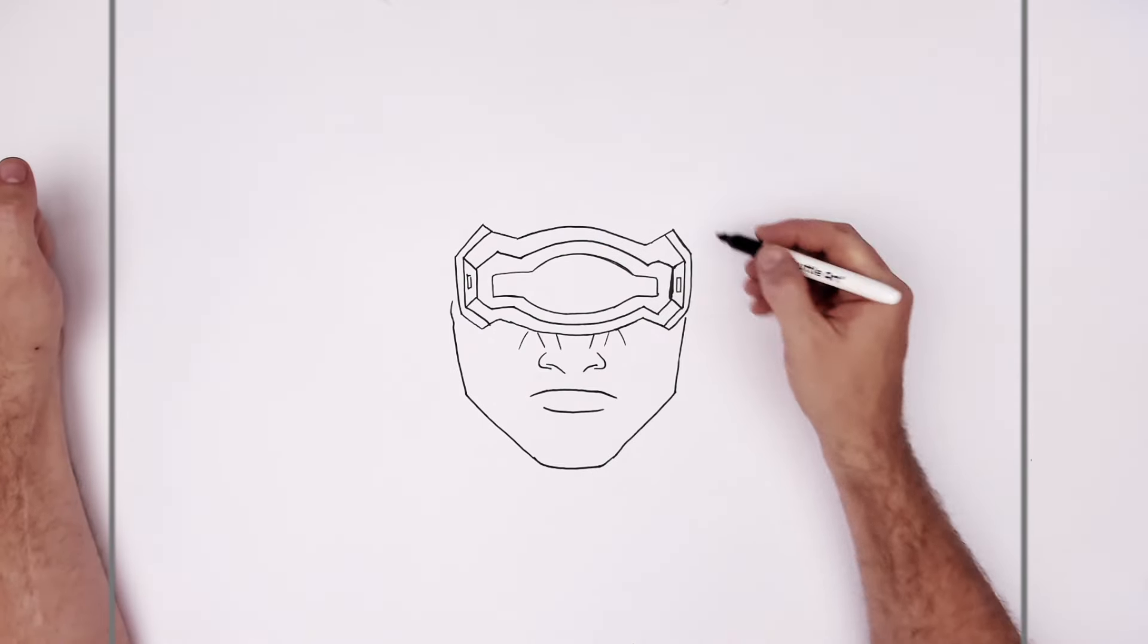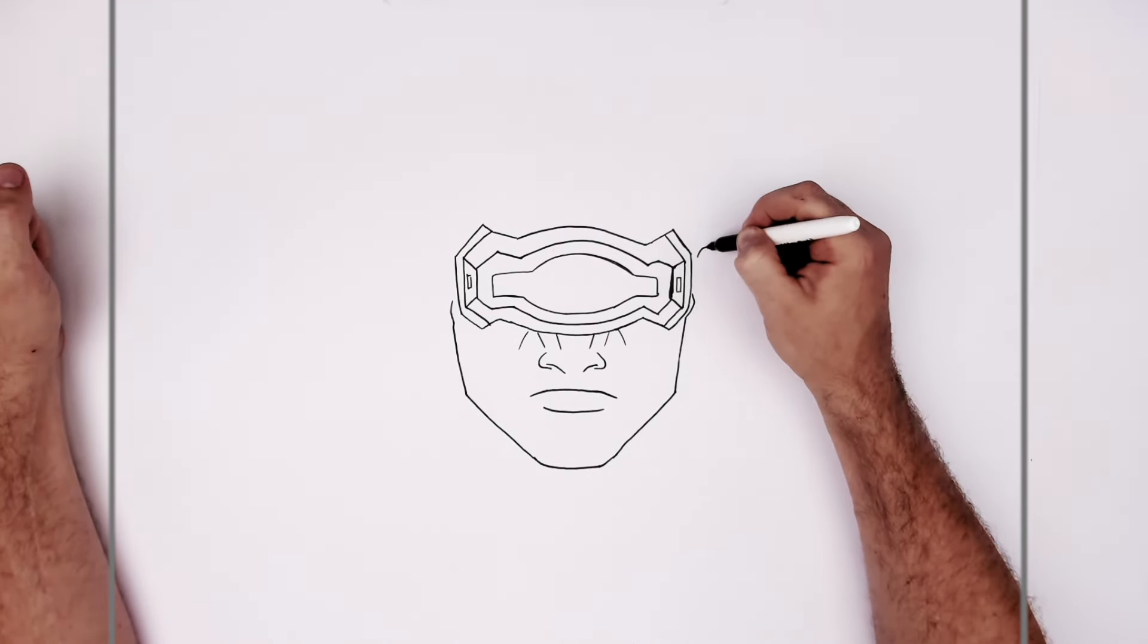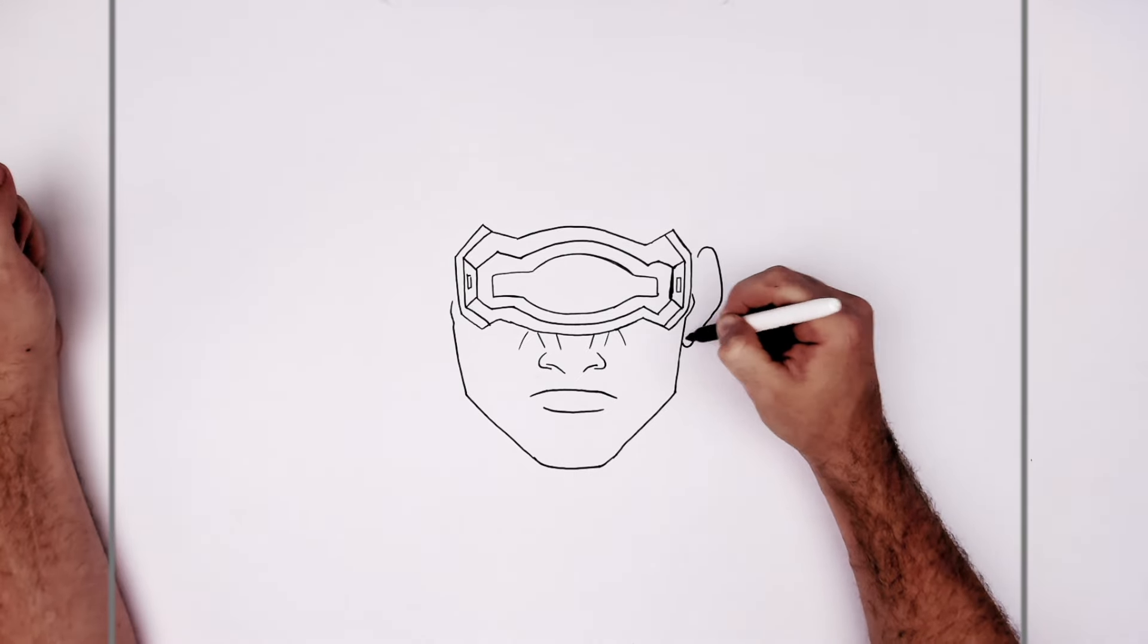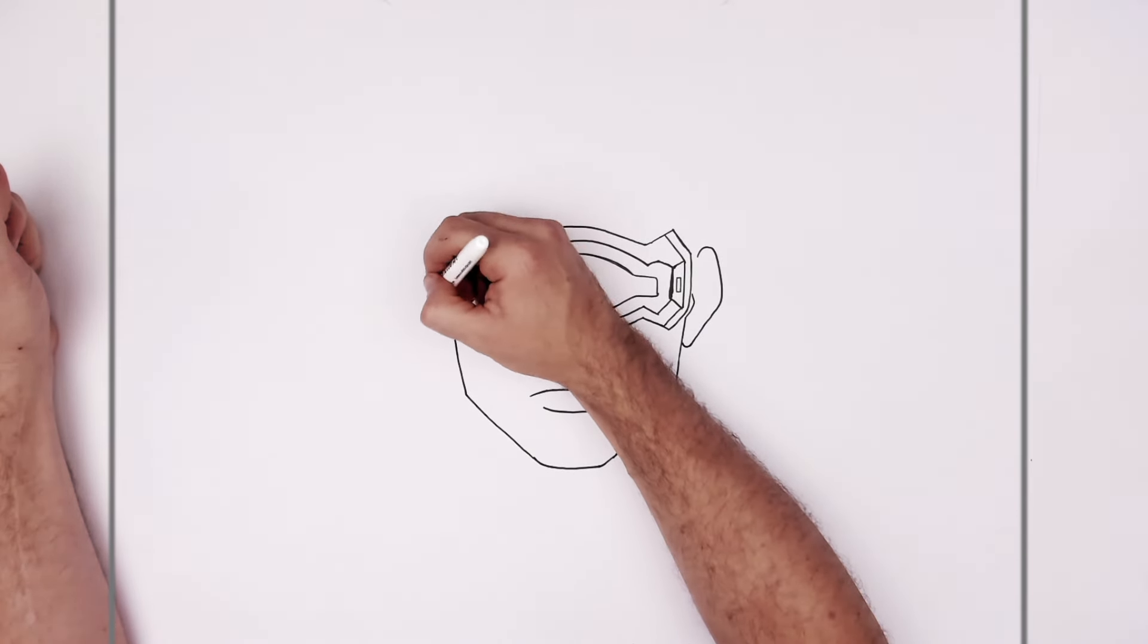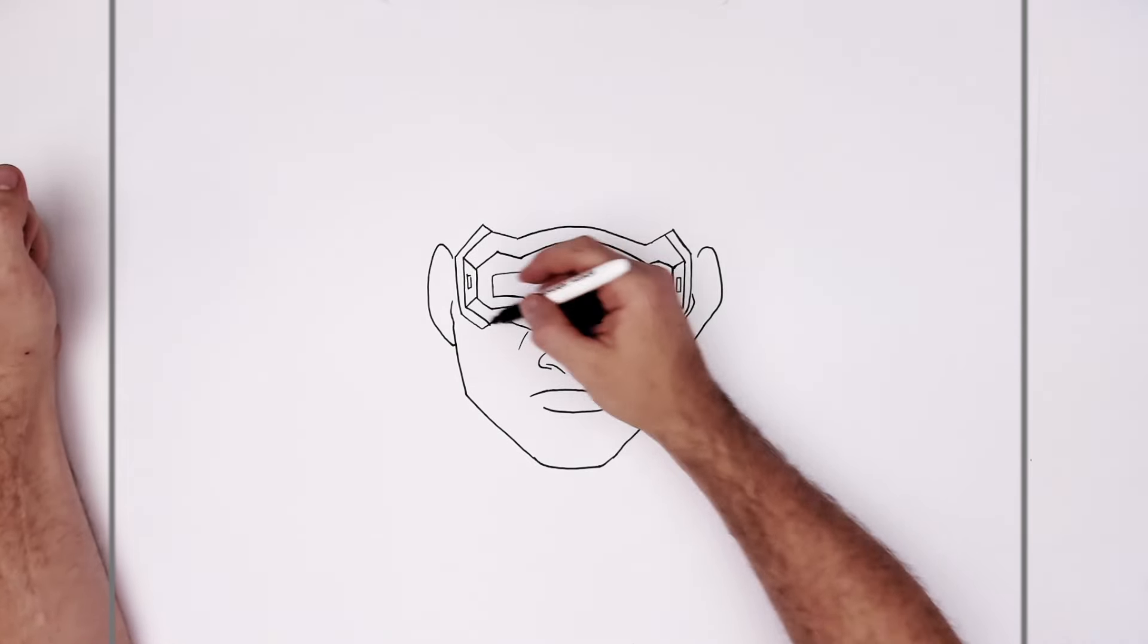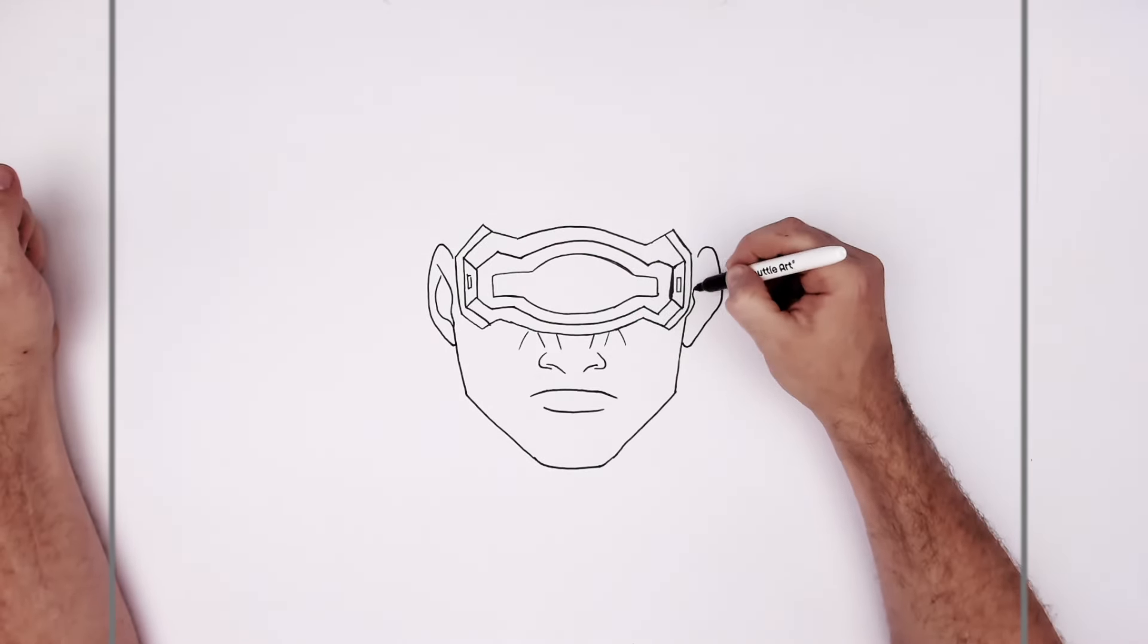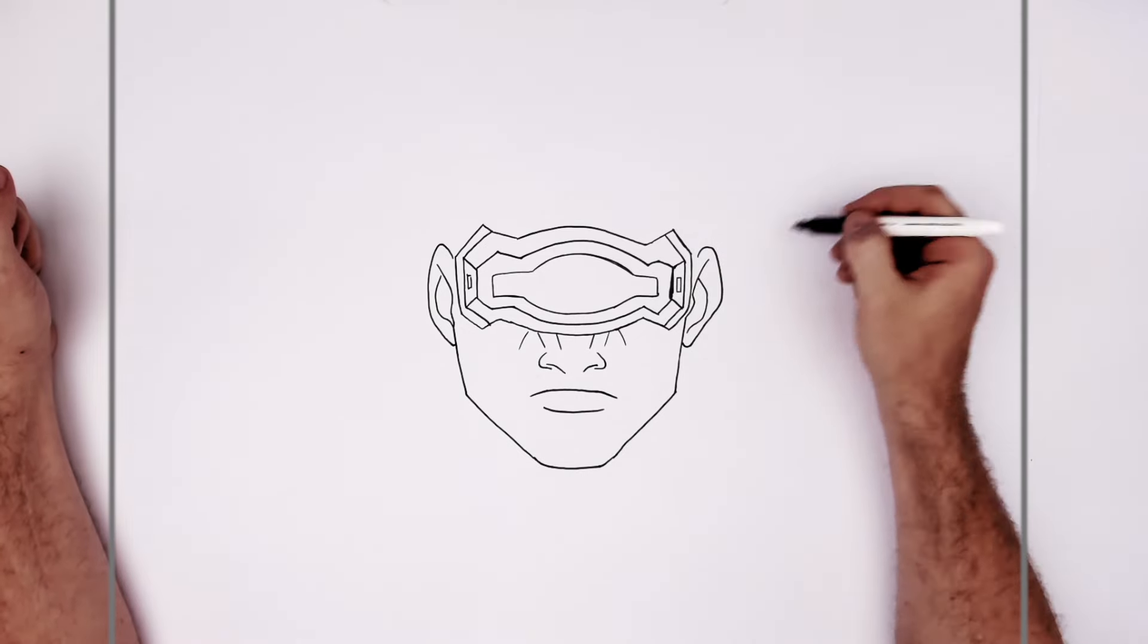And then it's kind of earlobe, kind of starts in here, it's got a little bump and then here. Curl around like so. And then we got ear lines, we'll just do like the letter J, simple ear lines.